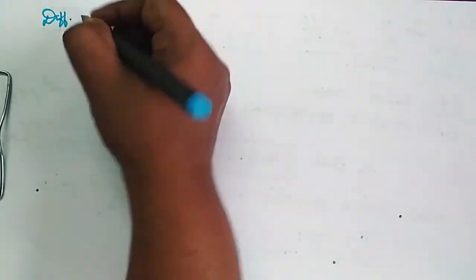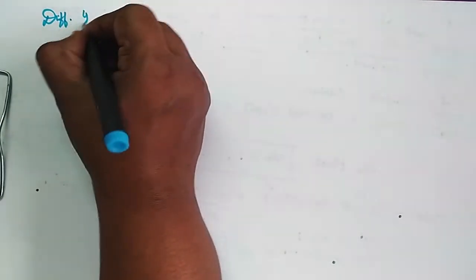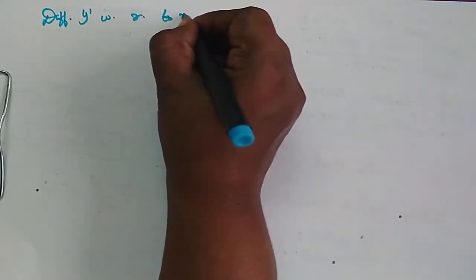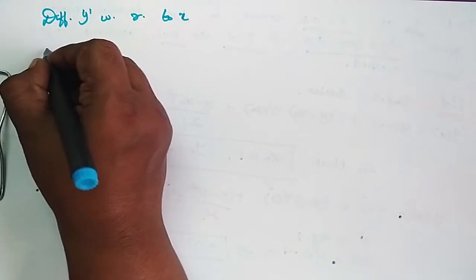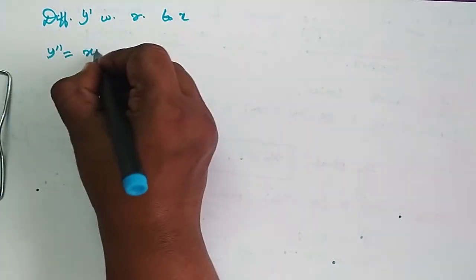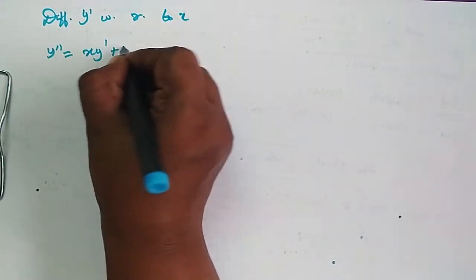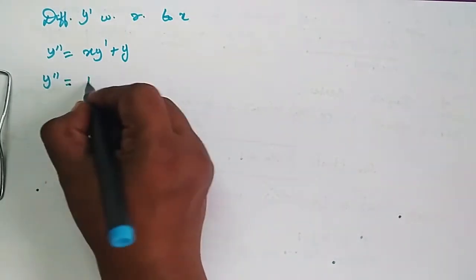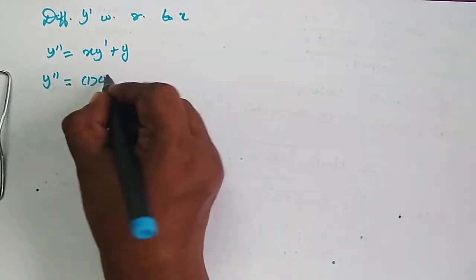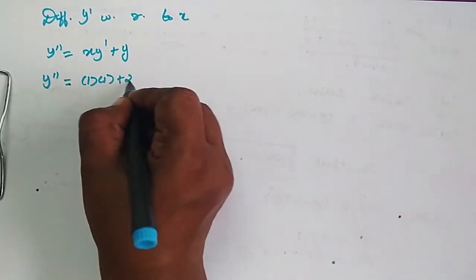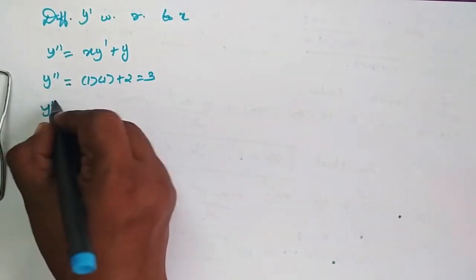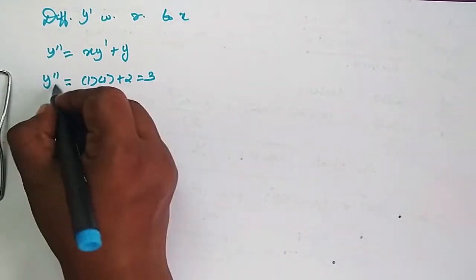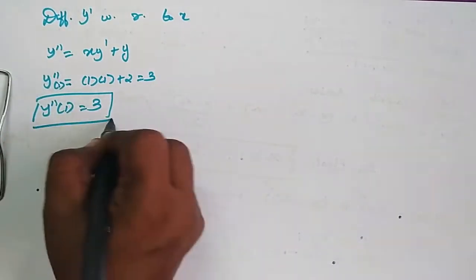Differentiate y' with respect to x. So y'' is equal to x·y' plus y. Therefore y''(1) equals 1 into 1 plus 2, which is equal to 3. So y''(1) is equal to 3.